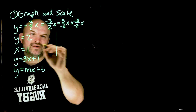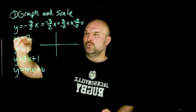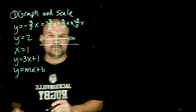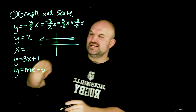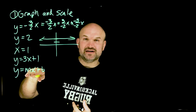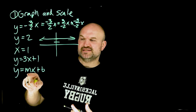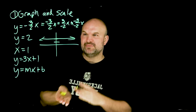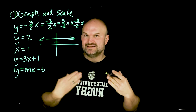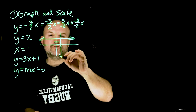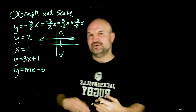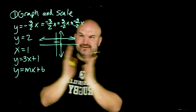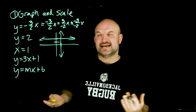The next mistake is when dealing with horizontal and vertical lines. When y equals 2, that means my y-value for all x-values is going to equal 2 — that represents a horizontal line. In slope-intercept form, the slope is 0, so we're just dealing with the y-intercept. On the flip side, if I have x equals 1, that means for all values of y, x is always equal to 1 — that represents a vertical line, where the slope is undefined.